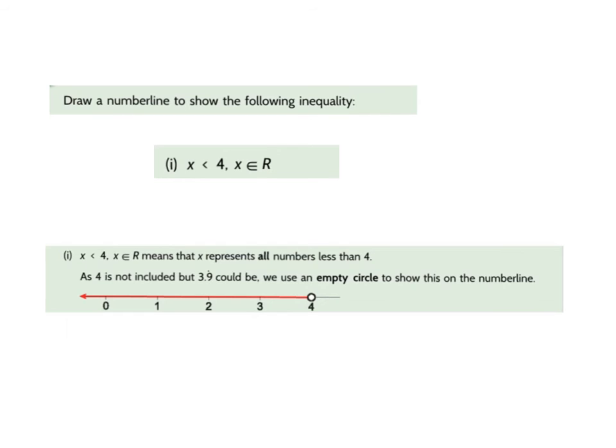Here we have another example where X is less than 4 and X is an element of R. So it's less than 4. So the first number it can be is 3.999, which means we leave the circle empty at 4 and we draw our thick red line showing there can be any value underneath that.